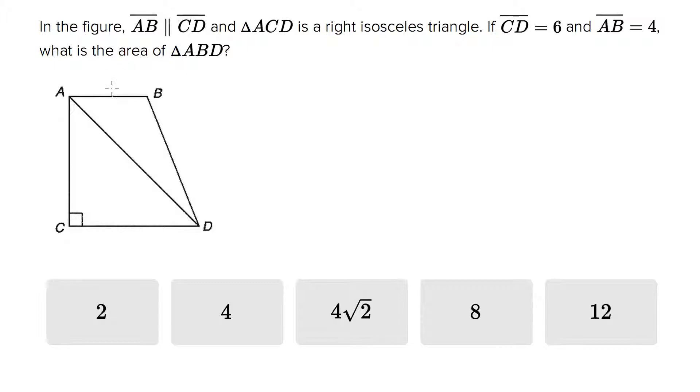So they tell us AB is parallel to CD. Okay, so I'm going to put that in right here. It says ACD is a right isosceles triangle. So they have the right triangle in there, they do not have the isosceles. So I'm going to draw that in here.